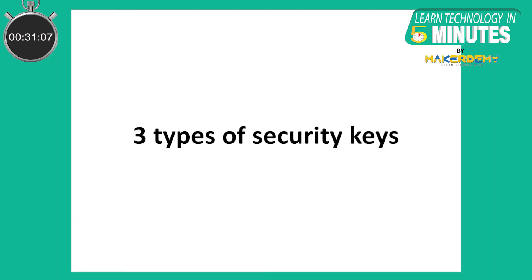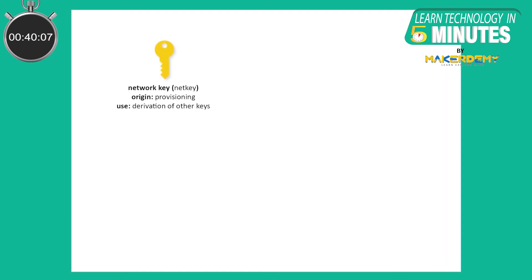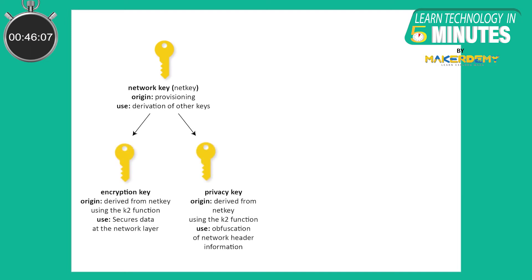Due to the separation of security between the network, application, and device levels, there are three types of security keys for BLE Mesh. The first is the Network Key. Possession of this shared key makes the device part of the network, also known as a node. There are two keys derived from the network key: the network encryption key and the privacy key. Possession of the network key allows a node to decrypt and authenticate up to the network layer, allowing the relay of messages, but no application data decryption.